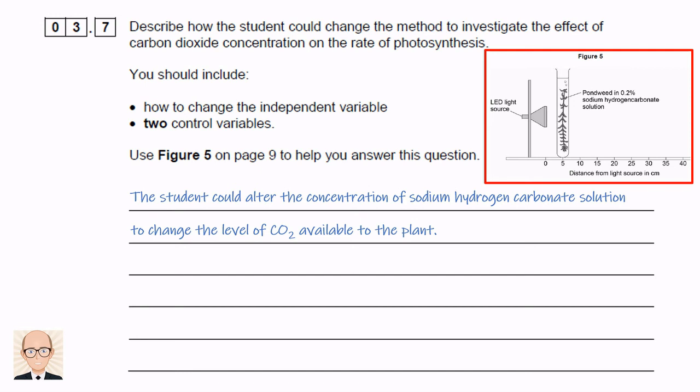There are a number of controlled variables that we would need to keep constant. We only need to identify two of them, but we could choose from the distance between the plant and the light source, the temperature of the plant or its surrounding solution, and the plant itself. You can't change the plant for a completely different one midway through the investigation.